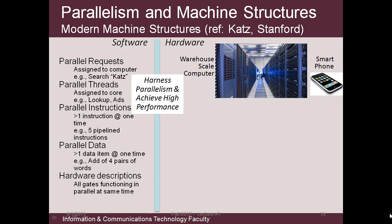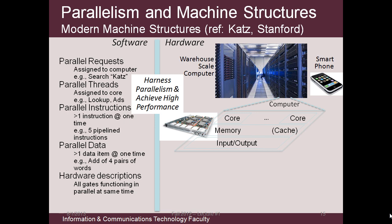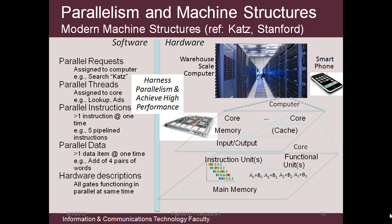This slide shows something of how present-day computing has moved on from the von Neumann model, with a much larger use of parallelism. An internet web search, for example, could travel to any one of many huge computer centers, with many processors running similar search algorithms. The requests can be split up amongst several machines with different threads on different cores, and pipelines of parallel instructions running on one core, and many data items being processed at once in each instruction. And most of the processor gates in the hardware are in operation at the same time.